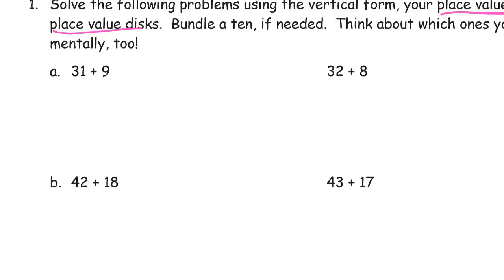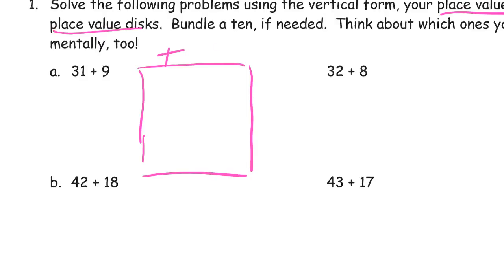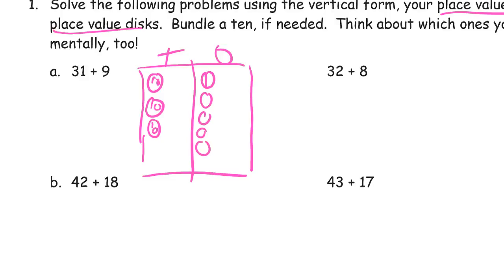So 31 plus 9 — if I'm going to do this on a place value chart, it's going to look like this as a picture. We're going to have tens and ones. 31 is three tens and one one, and then the nine ones: one, two, three, four, five, six, seven, eight, nine. These disks and the pictures of the disks on the charts are really favorites.